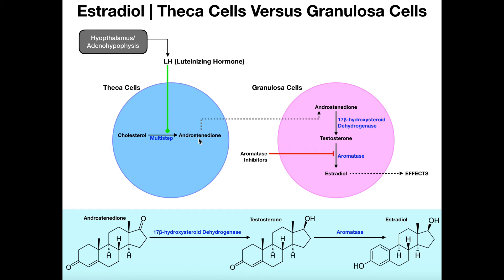However, androstenedione does cause the production of some body hair in women. Women naturally have pubic hair and axillary hair, and that hair growth is promoted by androstenedione. Androstenedione is not the end product here, although some of it is released into the blood. Most of it is sent over to the granulosa cells, and they're going to finish the job that the theca cells started.